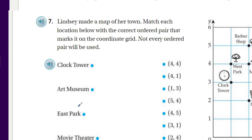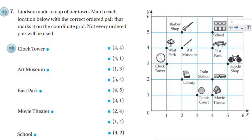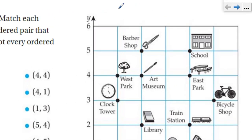Now it says Lindsay made a map of her town. Match each location below with the correct ordered pair that marks it on the coordinate grid. Not every ordered pair will be used. Now we have a clock tower. A couple things here — recall, this is the x-axis and this is the y-axis up here. Remember, we always write everything as x, y.